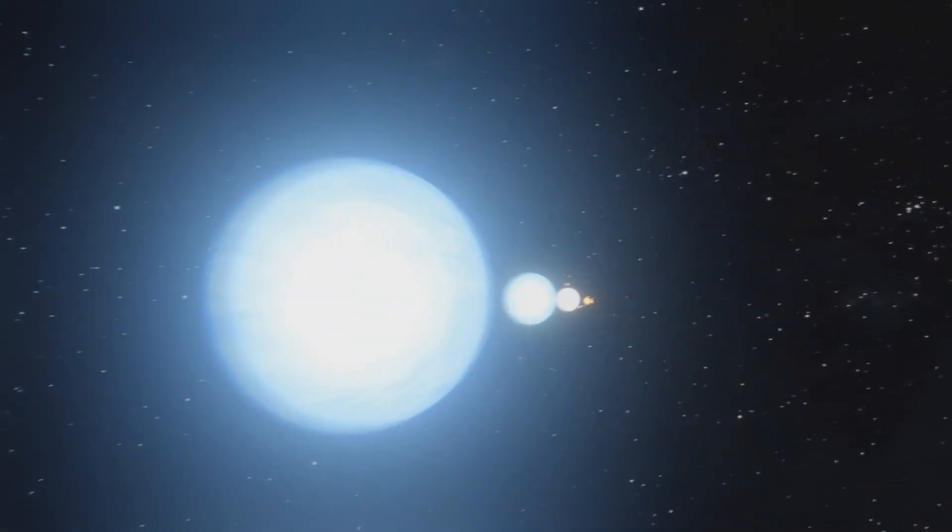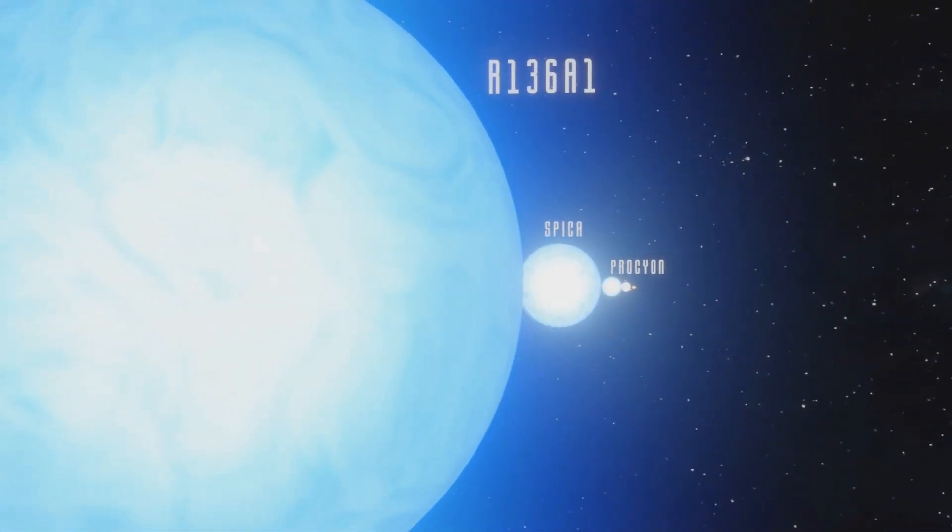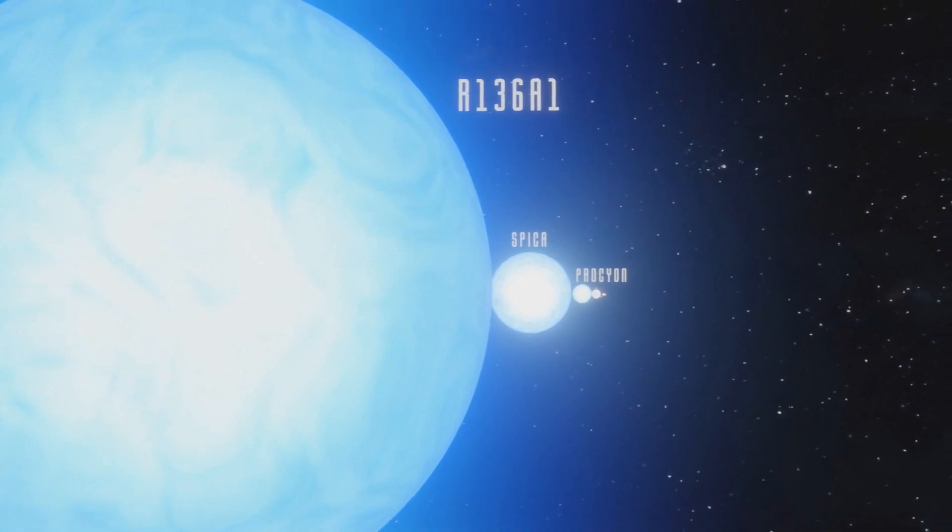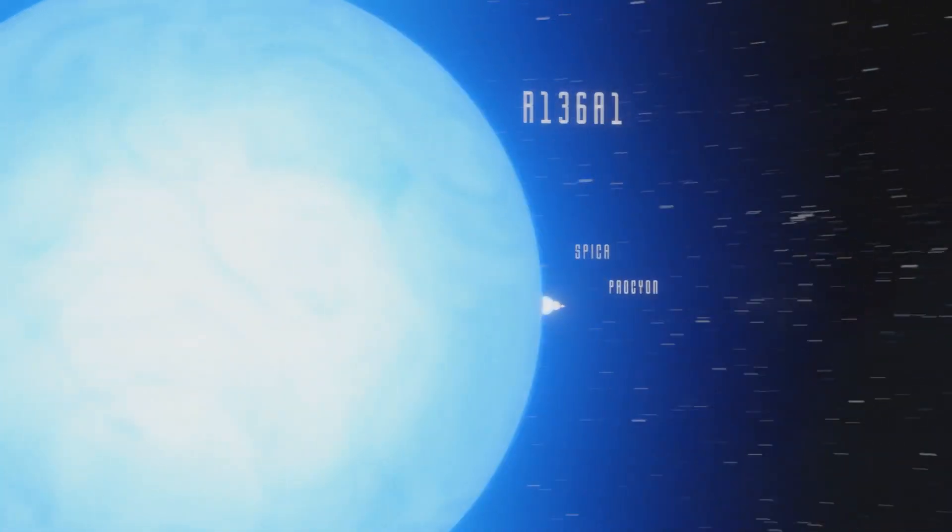There are many stars which are more massive than our Sun, such as Procyon, Spica, and R136A1, which is one of the most massive stars known. These make our home planet look rather microscopic in comparison.